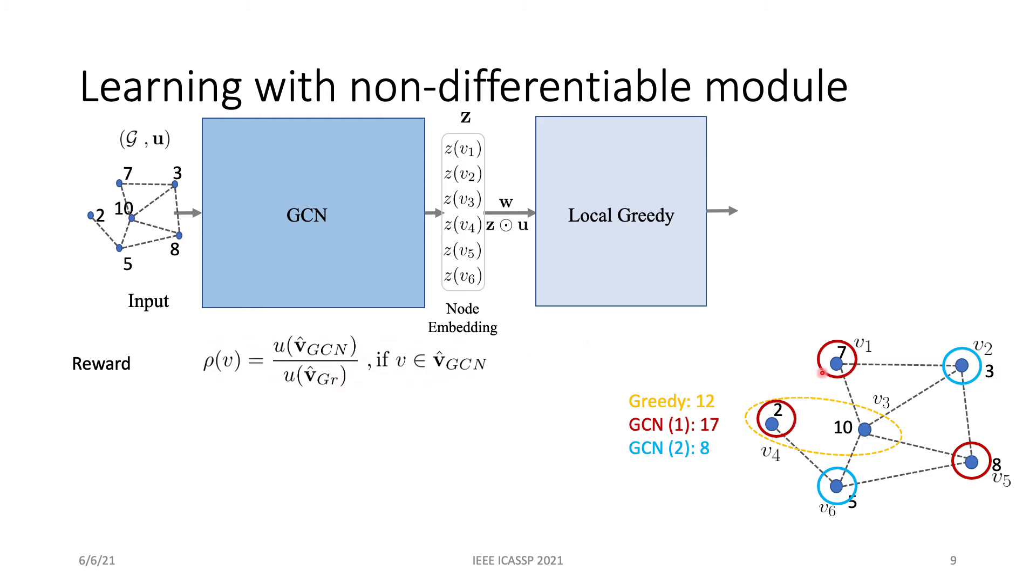With this example, we have three different solutions from greedy and two instances of GCNs. For these two instances of GCNs, we will generate two reward vectors. So here, we'll notice that only those in the solution will be updated. Otherwise, it's just Z.